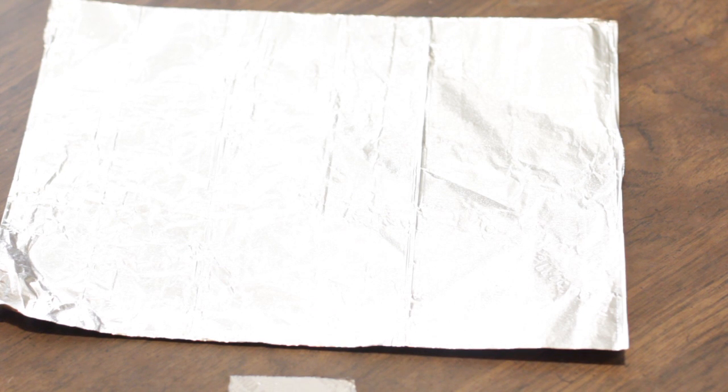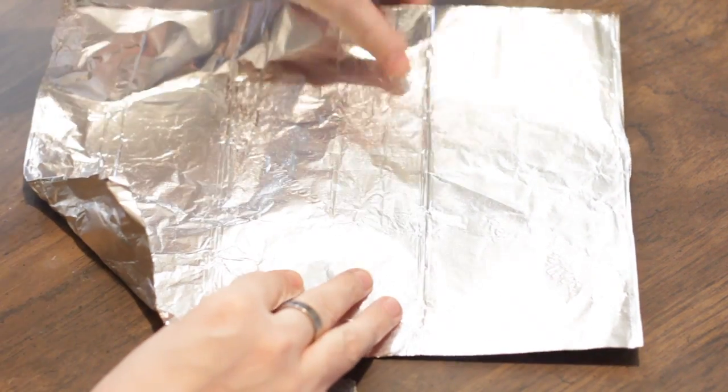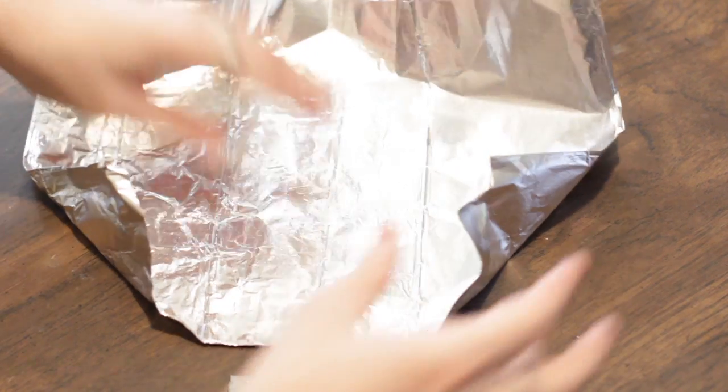One of the greatest parts about aluminum foil, or tin foil, or foil sheets, or Reynolds wrap, or whatever you want to call it, is that it very easily retains any shape that you put it in, as you can see here.